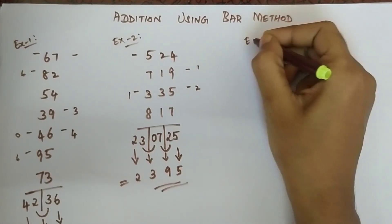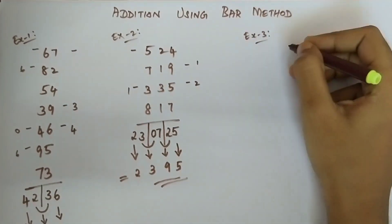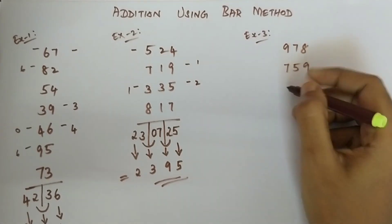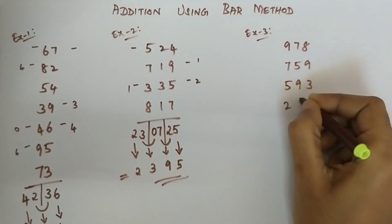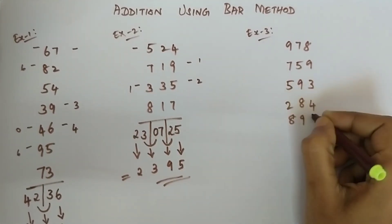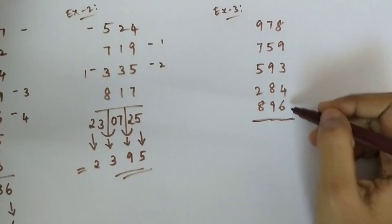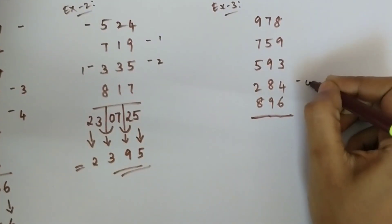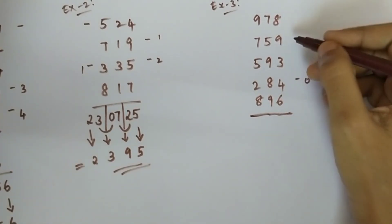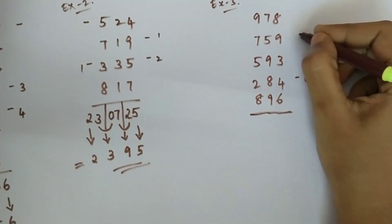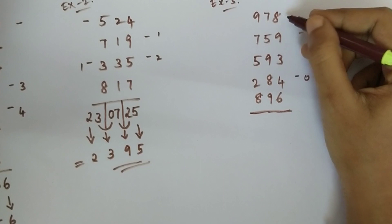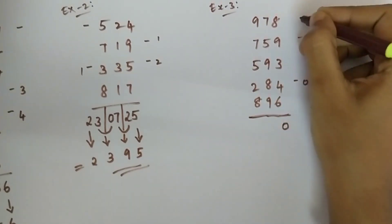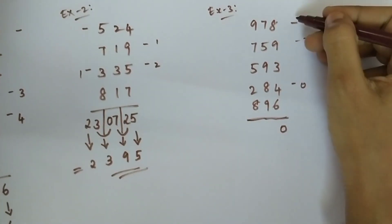Let's see example 3. 6 plus 4 is 10, 0 plus 3 is 3, 3 plus 9 is 12, 2 plus 8 is 10 — so 0 here. There are 1, 2, and 3 bars.